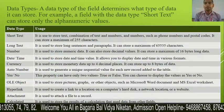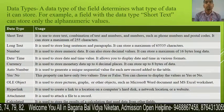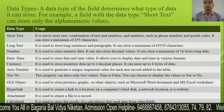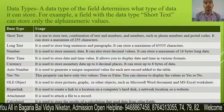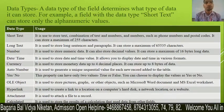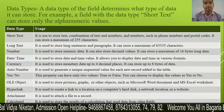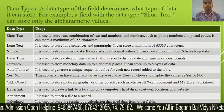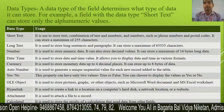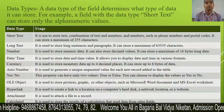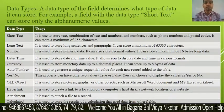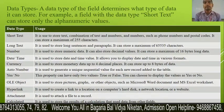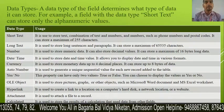The data type of a field determines what type of data it can store. We insert different types of data such as character data, numeric data, date and time, or a file or a link. The data type determines what type of data you will insert in the field.